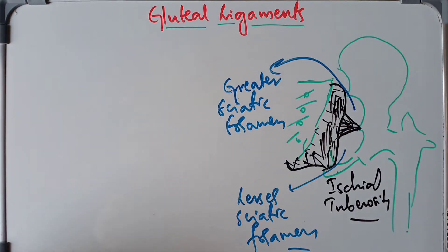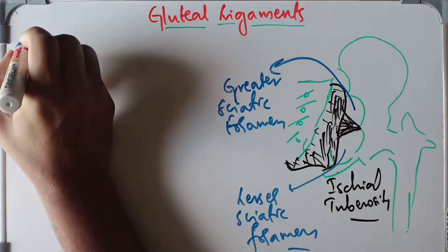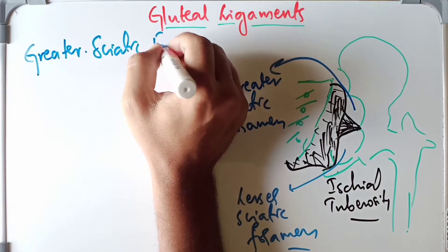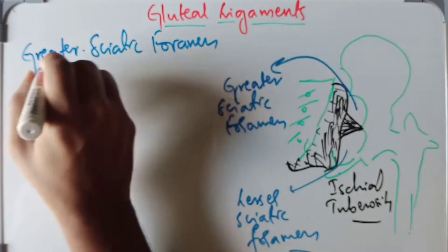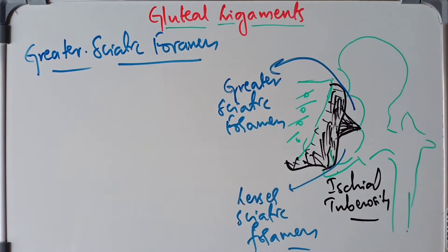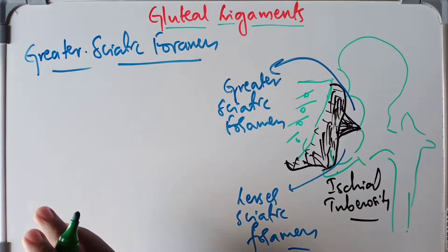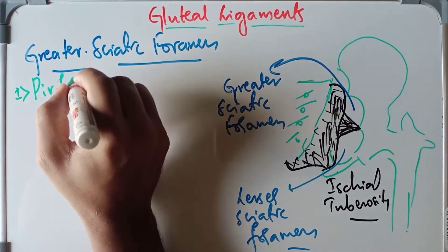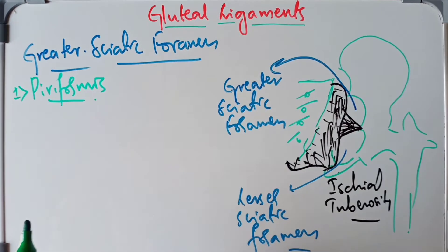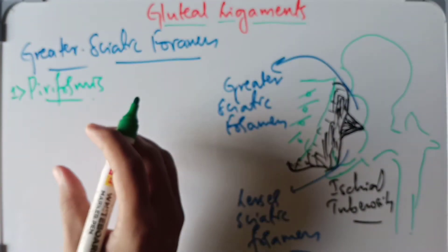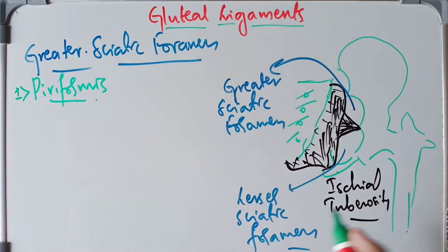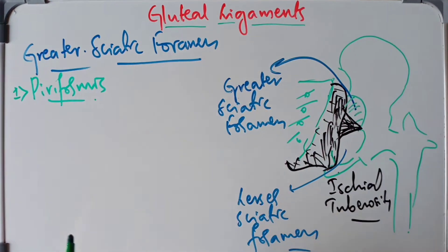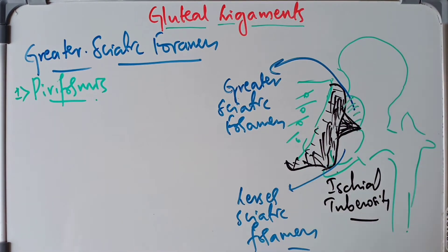Now we will discuss the structures passing through the greater sciatic foramen. First, we begin with the small muscle known as the piriformis. The piriformis emerges from the pelvis and almost completely fills the greater sciatic foramen. It is therefore called the key muscle of the greater sciatic foramen.